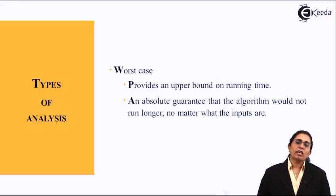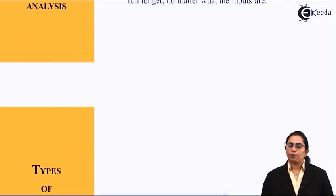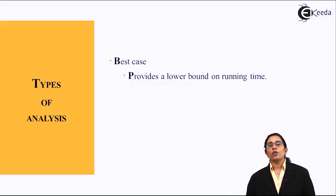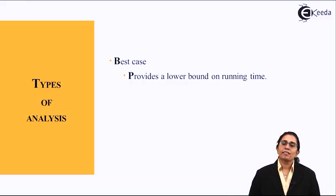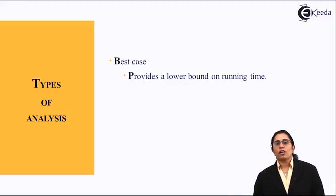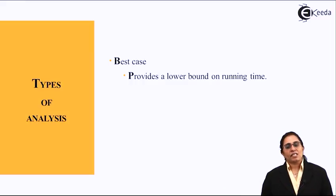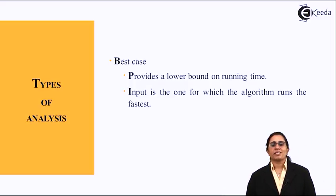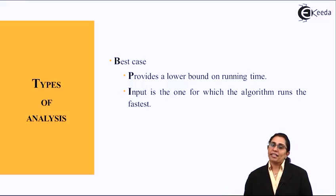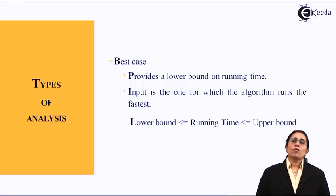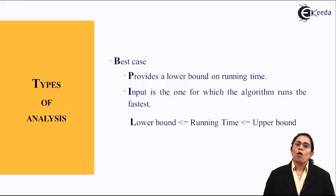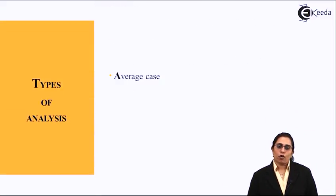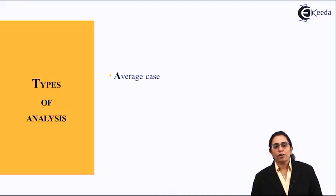The second type is the best case analysis. It provides a lower bound on the running time — it takes the minimum time required to give the desired precise output. The input for which the algorithm runs the fastest is the best case. It is expressed as: lower bound ≤ running time ≤ upper bound.